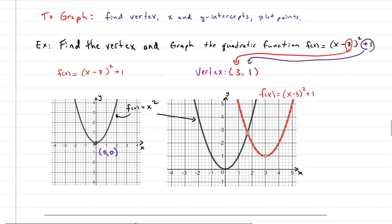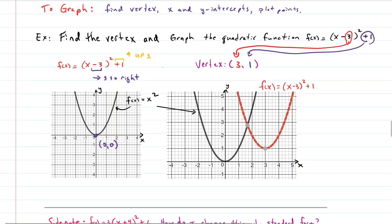From function transformations, we know the original function x-squared has vertex (0, 0). The h value of 3 means the parabola has been shifted three units to the right, and the k value of 1 means shifted one unit up. Shifting up one and right three puts our new vertex at (3, 1).